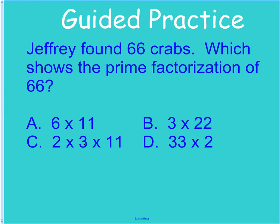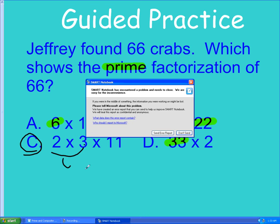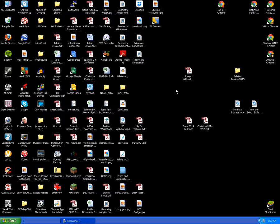Jeffrey saw 66 crabs. What shows the prime factorization of 66? Well, 6 is not prime, 22 is not prime, 33 is not prime. So the only one that's all prime is C. 2 times 3 is 6, 6 times 11 is 66.